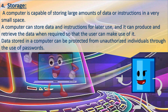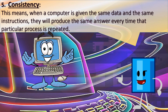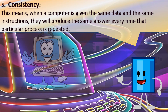4. Storage. A computer is capable of storing large amounts of data or instructions in a very small space. The computer can store data and instructions for later use and can produce and retrieve the data when required so that the user can make use of it. Data stored in the computer can be protected from unauthorized individuals through the use of passwords. 5. Consistency. When a computer is given the same data and the same instructions, it will produce the same answer every time that particular process is repeated.